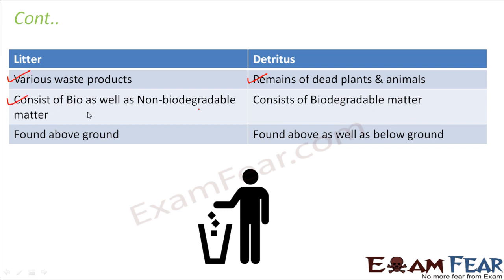Litter consists of biodegradable as well as non-biodegradable matter. Biodegradable matter can be broken down by microorganisms, whereas non-biodegradable matter, like plastics, cannot be broken down into simpler forms by microorganisms. But detritus consists only of biodegradable matter, because the process of decomposition can completely break it down and return it to the soil in the form of minerals, inorganic materials, or humus.